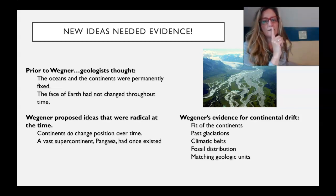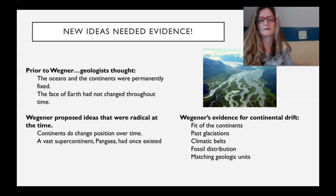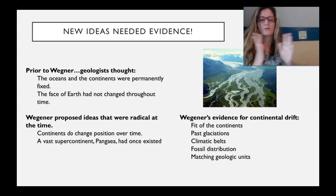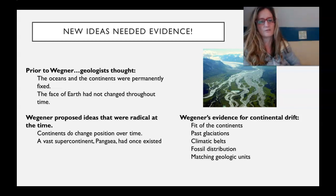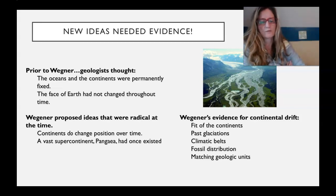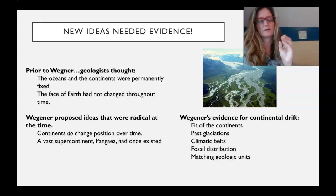When he proposed continental drift in 1915, it was a brand new idea — including Pangaea, the supercontinent where the continents came together. He had built up a lot of evidence over time, studying maps and investigating other people's work. One piece of evidence was that the continents fit together like a puzzle, and he put them together to make Pangaea.